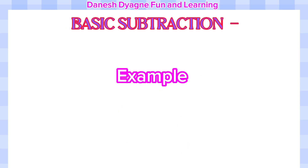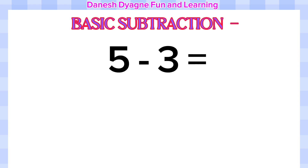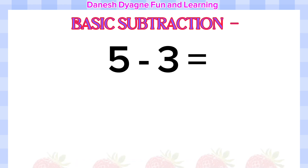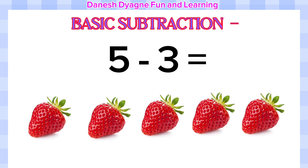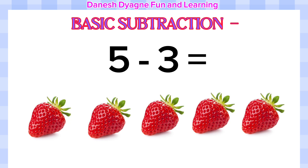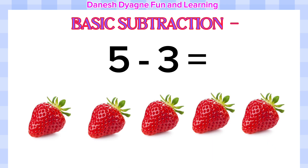Now let's have some examples. Five minus three. We will use five objects or strawberries to be able to subtract the number quickly. Let's count all the objects together: one, two, three, four, five. Five strawberries.